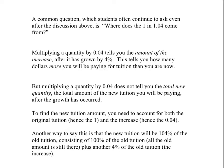A common question students often ask is: where does that 1 in 1.04 come from? What if we just multiplied by 0.04? That would tell us the amount of the increase after 4% growth — how many dollars more you will be paying for tuition next year. But multiplying by 0.04 alone does not tell you the total new tuition. To find the total new tuition, you need to account for both the original tuition (hence the 1) as well as the increase (hence the 0.04).